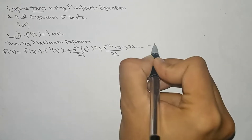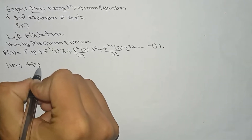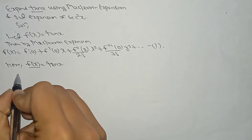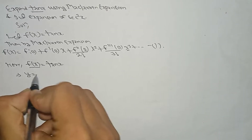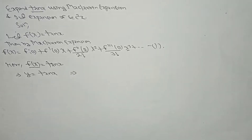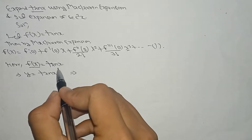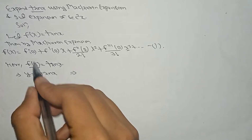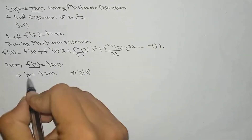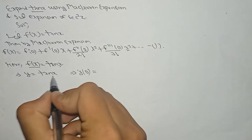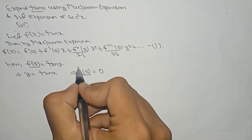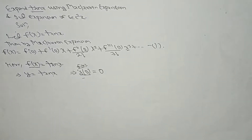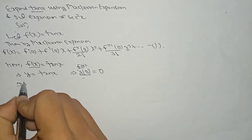This is equation one. Here y(x) = tan(x). We can suppose y(x) = y, so y = tan(x). If we put x = 0, we get y(0). So y(0) = tan(0) = 0. This y(0) means y-naught of 0. Now we differentiate with respect to x.